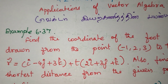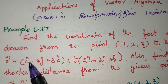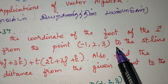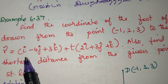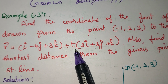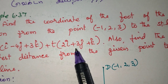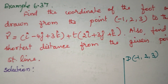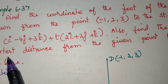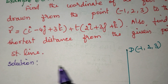Example 6.37. Find the coordinate of the foot of the perpendicular drawn from the point (-1, 2, 3) to the straight line: r vector equals i - 4j + 3k + 3 times (2i + 3j + k). Also find the shortest distance between the given point to the straight line.